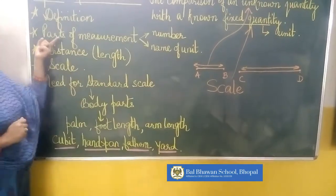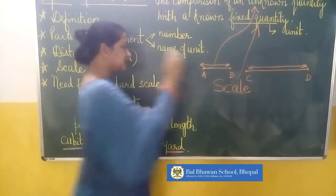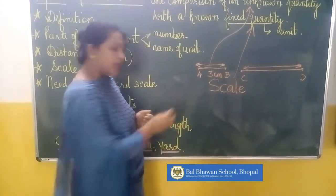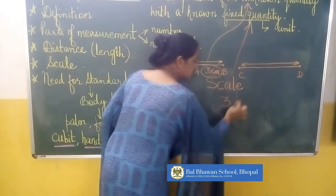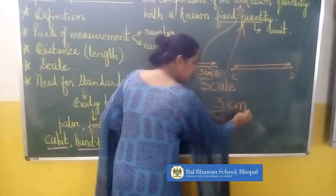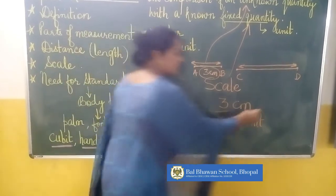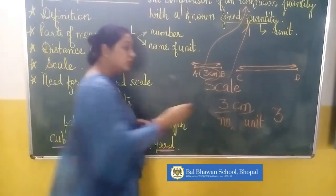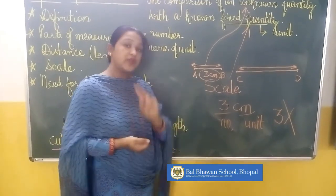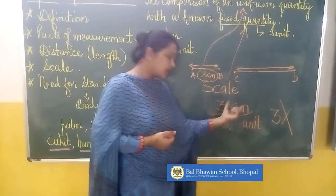Now, what are the parts of measurement? Suppose the length of a line segment is 3 cm. I have written two things: 3 cm. So what is 3? Three is the number, and cm is the unit. If I write just '3' without mentioning the unit, will it be correct? No, because I have not mentioned the unit. So for measurement, we have to write two things: the number and the unit. So 3 cm is the correct answer.